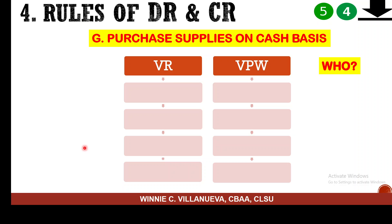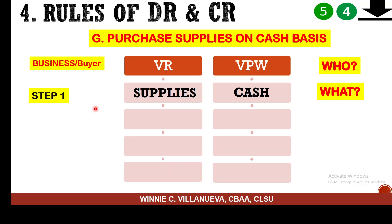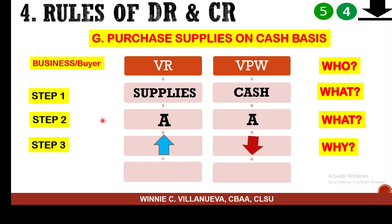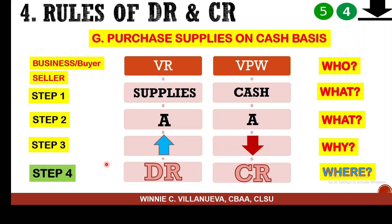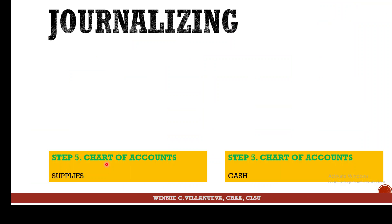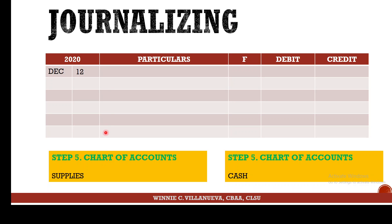The seventh sample: purchase of supplies on a cash basis. Both supplies and cash are assets — one increases (supplies) and one decreases (cash). You debit the asset that increased and credit the asset that decreased. Date: December 12. Supplies is debited because it was received; Cash is credited because it was given out.